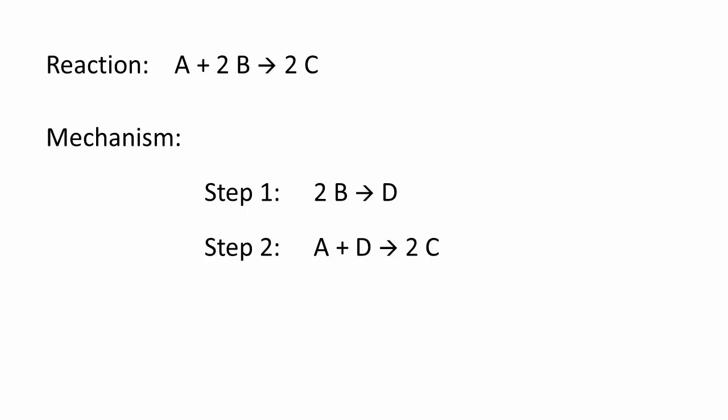The steps of a reaction mechanism, once summed, must absolutely yield the global reaction. In other words, once all of the steps are completed, the right number of reactant molecules must be consumed, and the right number of product molecules must be generated.